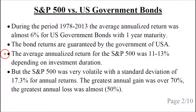The average annualized return for the S&P 500 was approximately 11 to 13%, depending on the investment duration. This was about twice as much as US government bonds, but the S&P 500 was also very volatile, with a standard deviation of 17.3%. The greatest annual gain was over 70% and the greatest annual loss was almost half.